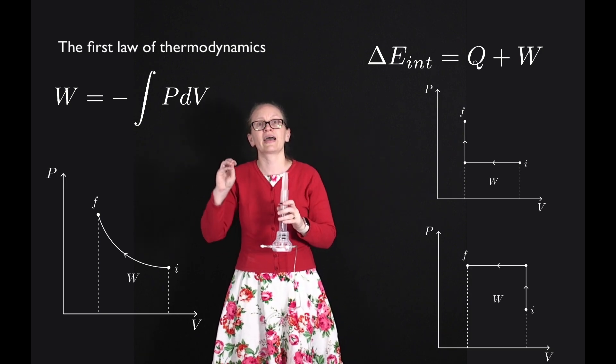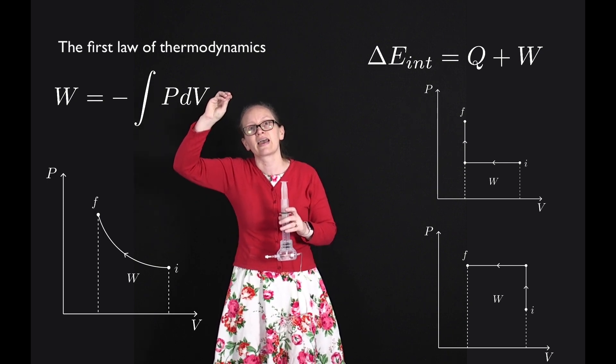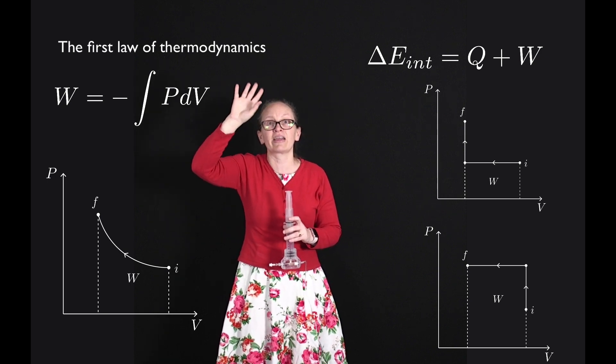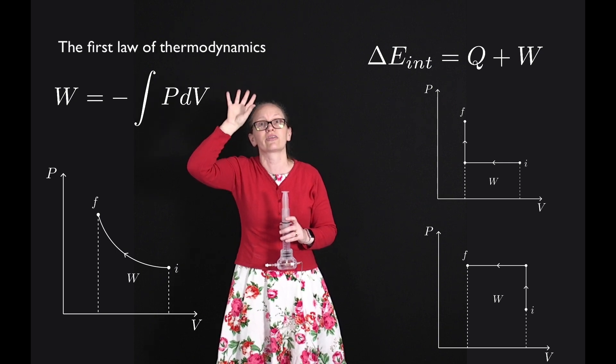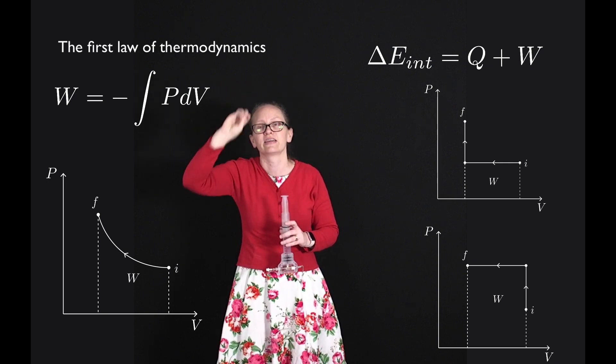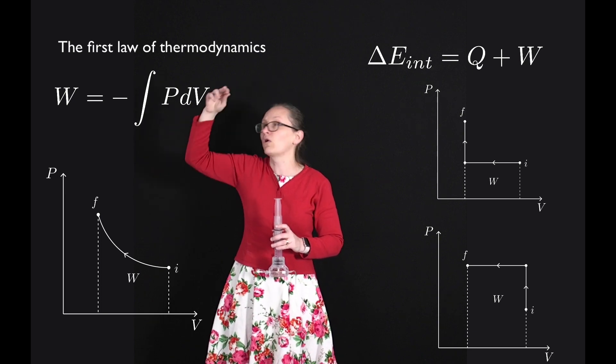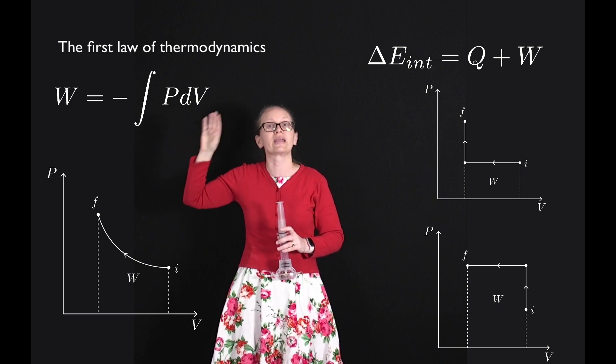On the other hand, if I start by increasing the pressure of the gas and then I decrease the volume, you can see that the area under that graph is much larger. So a lot more work is done on the gas in this second case. Of course I can have a third case going from my initial state to my final state along a more intermediate path, in which case the work done on the gas is more intermediate.